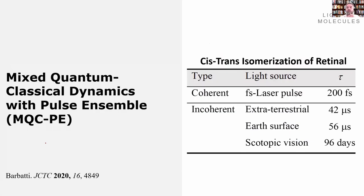Very recently, I also developed a method to simulate the effect of incoherent light during the dynamics. So instead of using a pulsed laser as usually assumed in our dynamics, you can use incoherent light. In a classic example, retinal under coherent light undergoes isomerization in 200 femtoseconds, but under incoherent radiation it may take microseconds or even days.